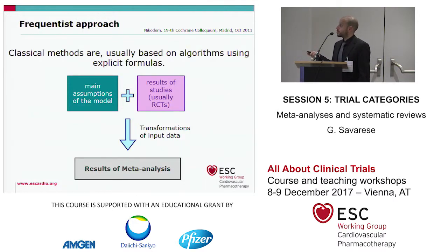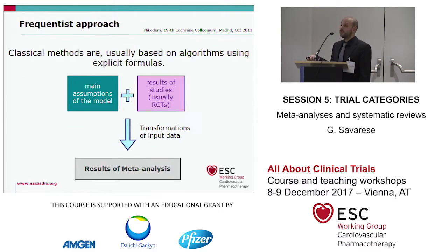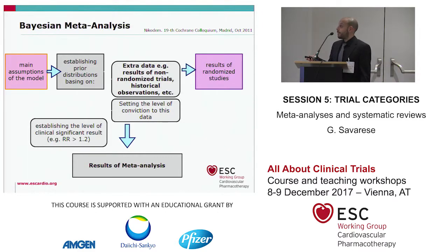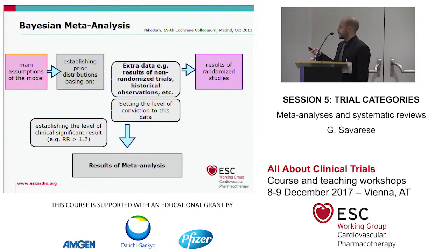The frequentist approach is what we usually find in papers. We have a hypothesis, we summarize the evidence from all the trials, and we get a pooled estimate — a result that summarizes all the studies included. In the Bayesian meta-analysis, we summarize all the evidence from the included trials but we can also add prior knowledge coming from, for example, observational studies, and then combine all of this to get the results.